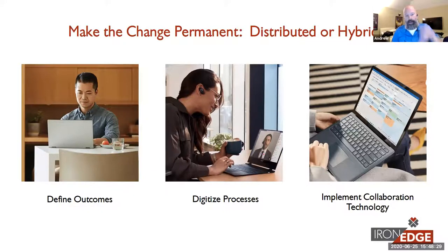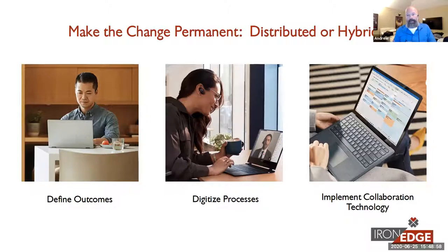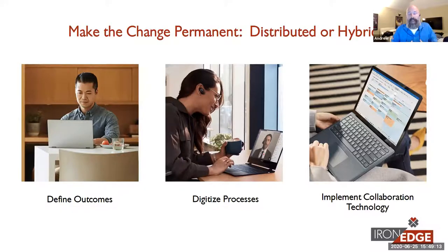Finally, implement collaboration and communications technology that supports flattening your organization and shifting work to a decentralized system. Once you've figured out your outcomes and start digitizing processes, you need a system that allows people to collaborate and communicate in a flattened way — not requiring very specific in-person interaction. Having streams of information, extensive notes, recorded video conference calls, taking notes in those calls, being able to share files and collaborate in real time — these are important collaboration technologies that will allow you to become more productive as your workforce is distributed.